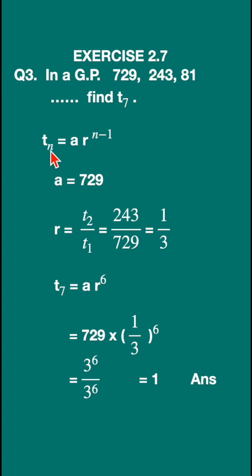The general formula for the nth term of a geometric progression is tn = a*r^(n-1), where a is the first term and r is the common ratio.